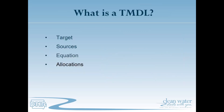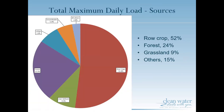Looking at where the main contributors for this pollutant come from, we can see in the pie chart that 52 percent of the total phosphorus coming into Lake Akwabi is generated from row crops, with 24 percent from forest land, 9 percent from grasslands, and 9 percent from other sources. There is a disproportionate amount coming from row crops in this particular watershed at 52 percent, where row crops only represent about 27 percent of the land use.